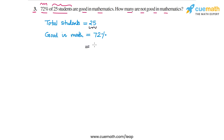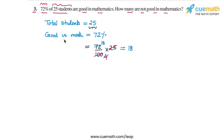So this will be 72/100 of 25. To compute: 100 divided by 25 is 4, and 72 divided by 4 is 18. So the number of students good in mathematics is equal to 18.